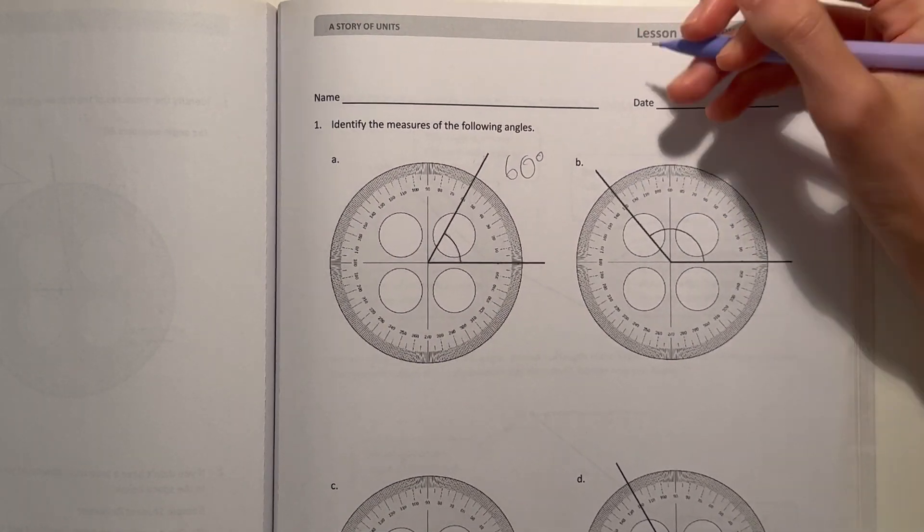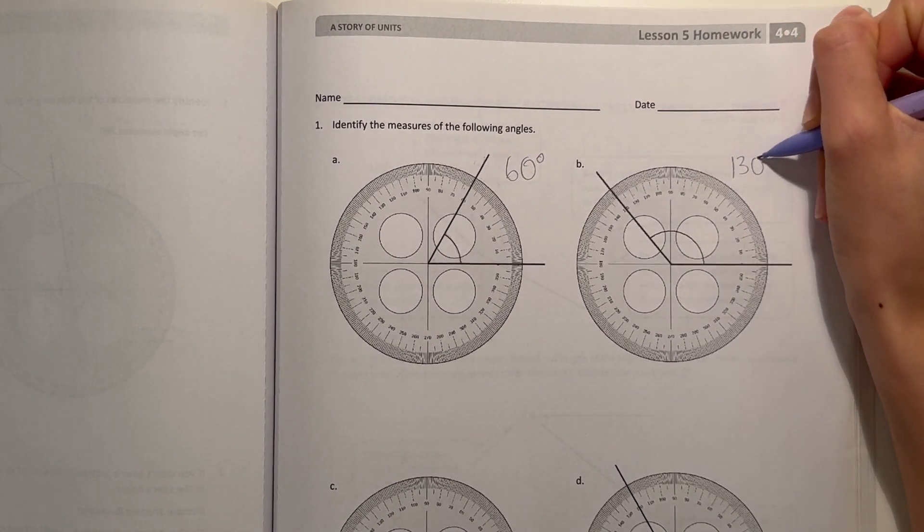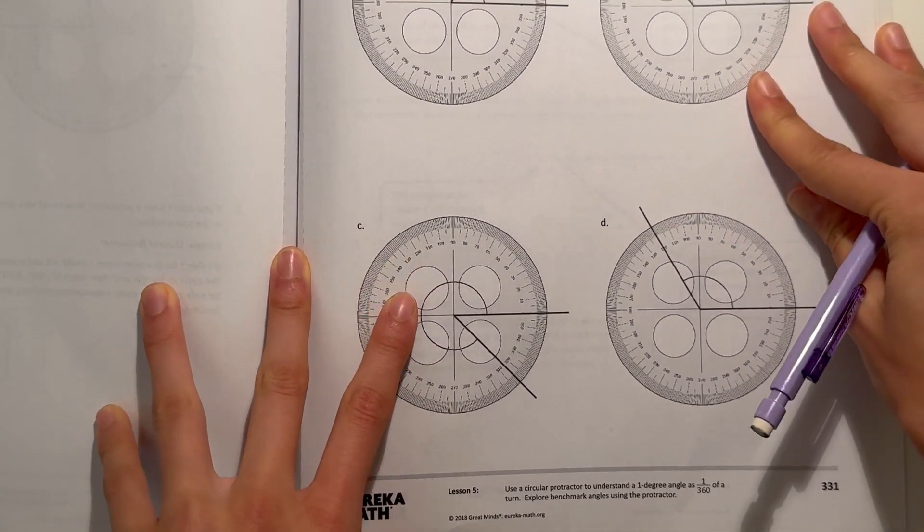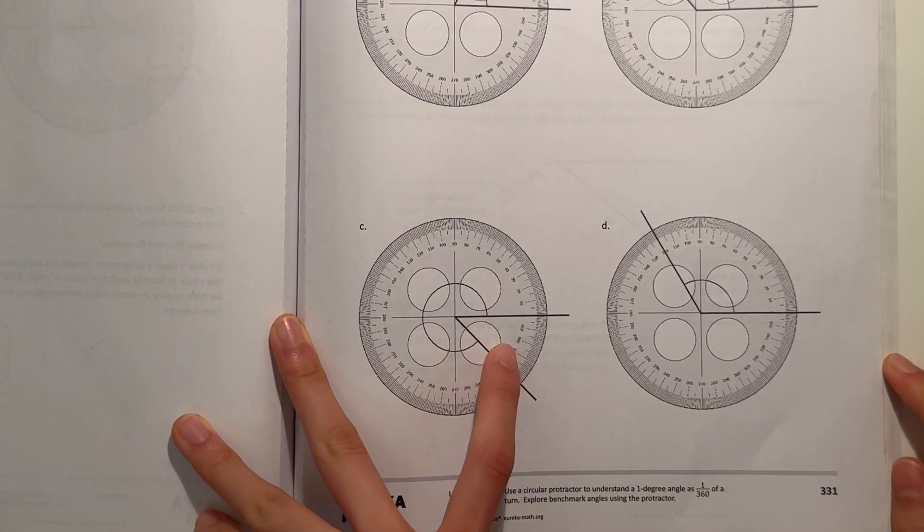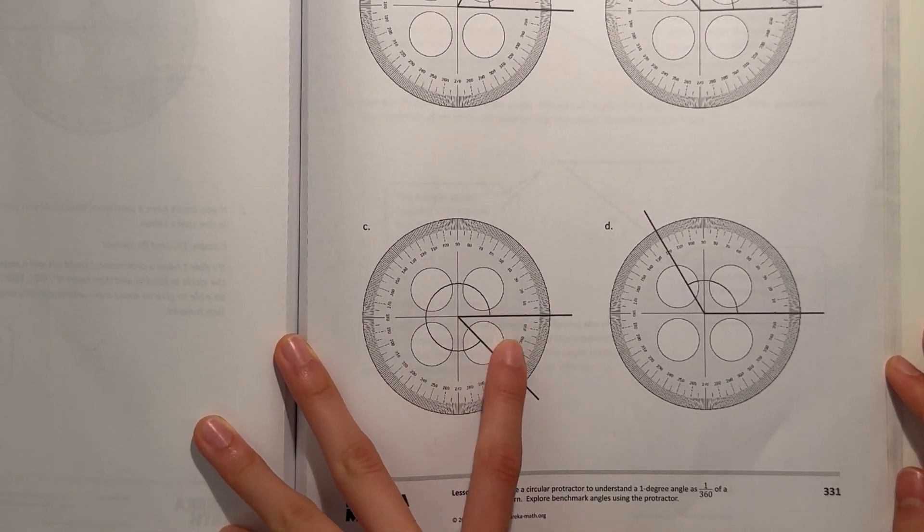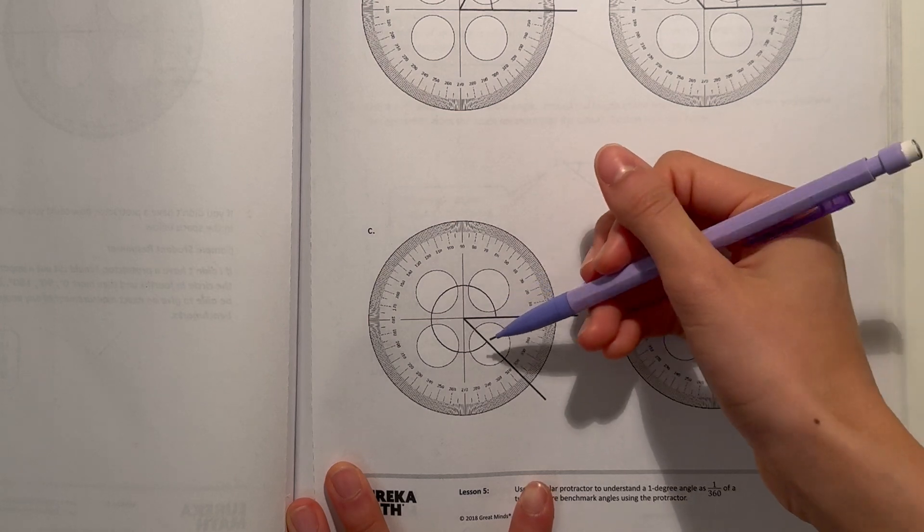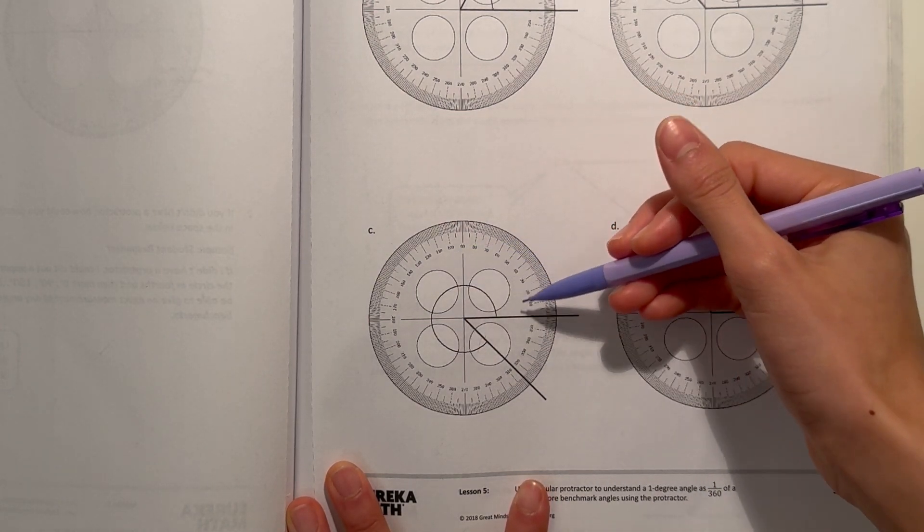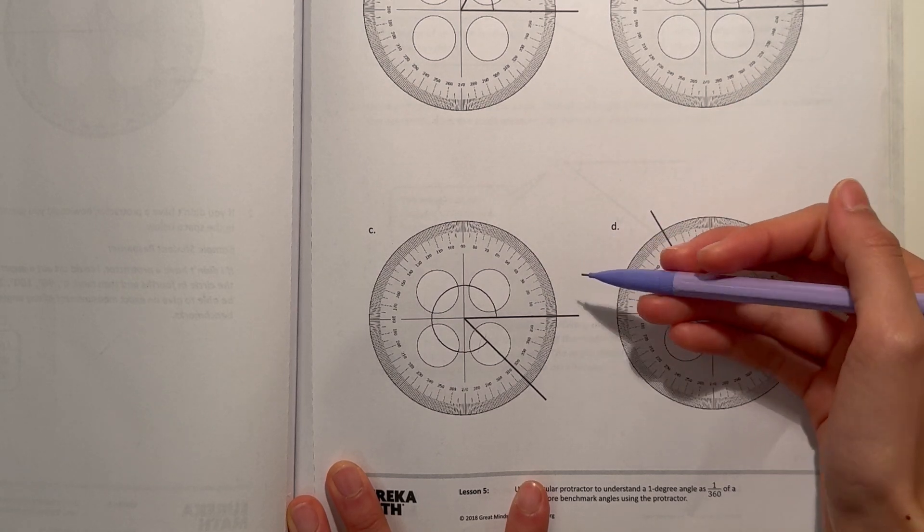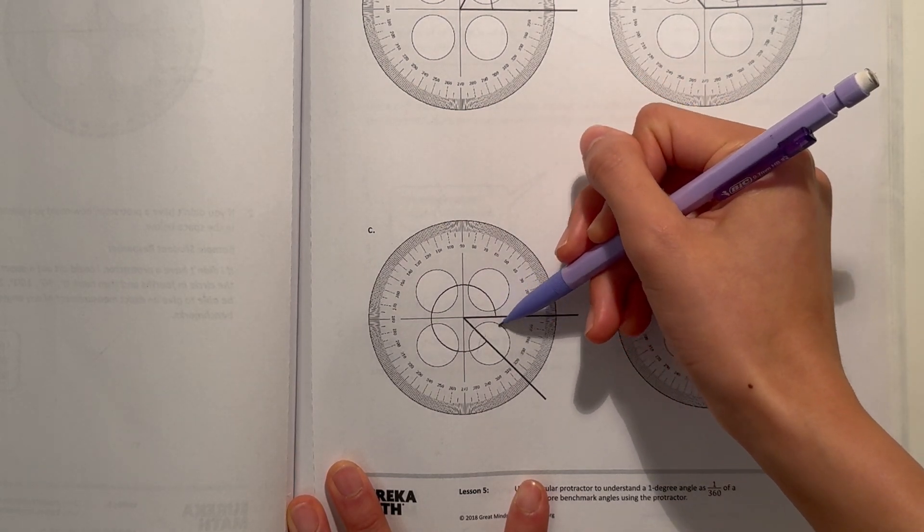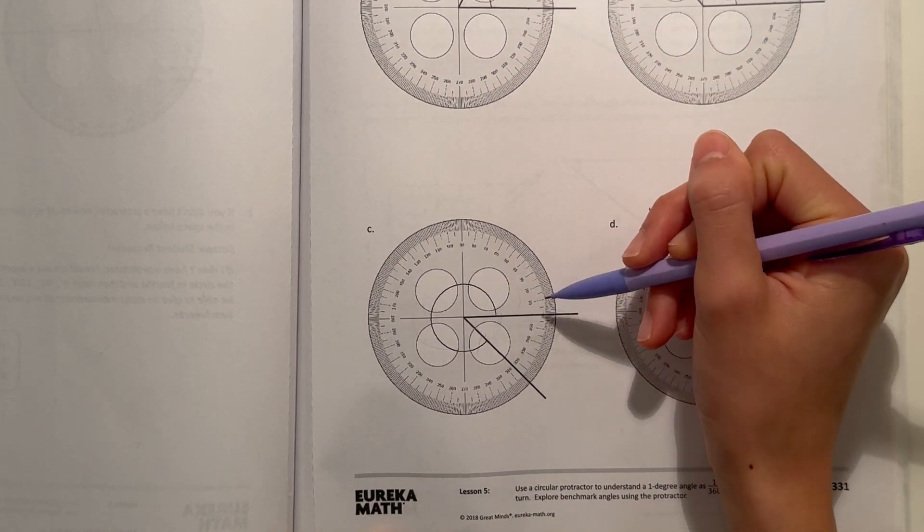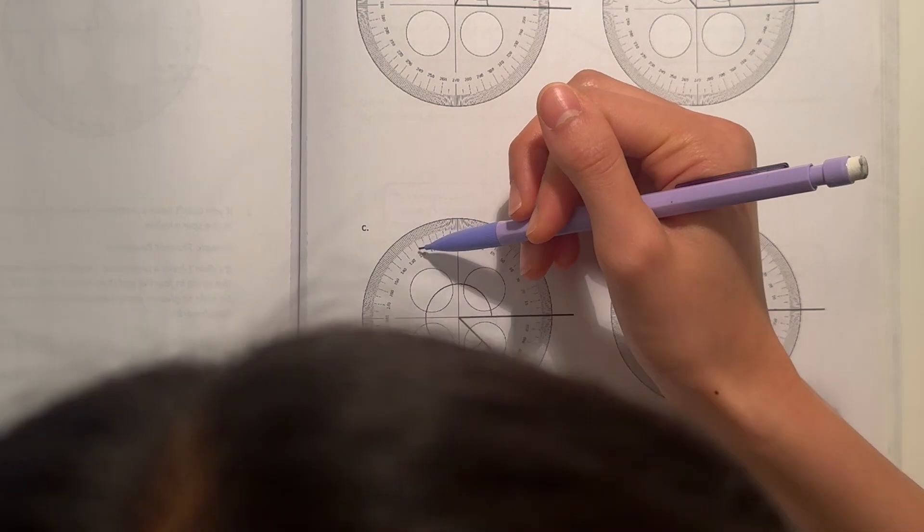Now C, this one is interesting because we have an angle here, but then the arc telling us to measure is telling us to measure outside of the angle. So what we're measuring here, we're not measuring the angle, we're measuring the thing surrounding it, the outside of the angle. So we start from zero and we make our way up.